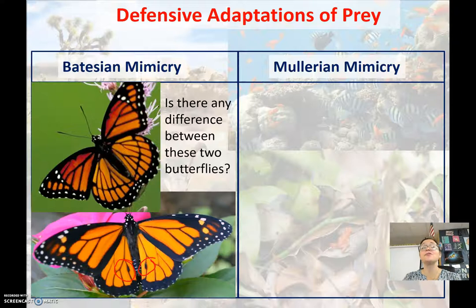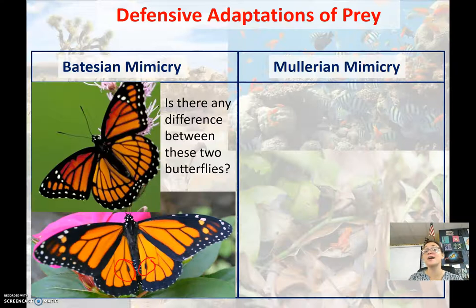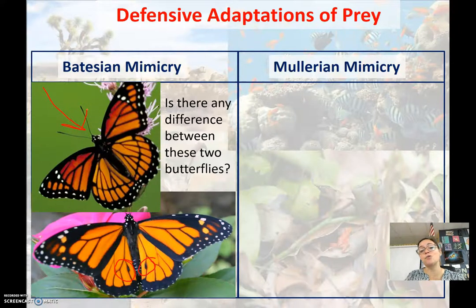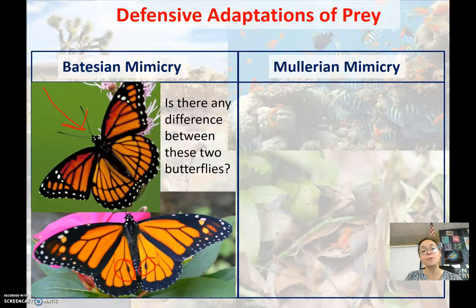If you're a predator — a bird that eats butterflies — as soon as you see an orange and black butterfly, you think monarch butterfly and avoid it. But this butterfly species right here is not poisonous. However, predators don't know that because it has evolved to look very similar and mimic the poisonous monarch butterfly.